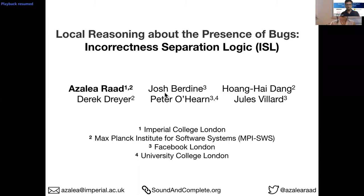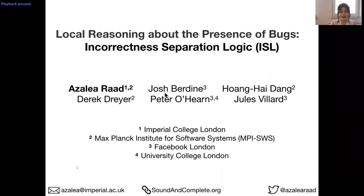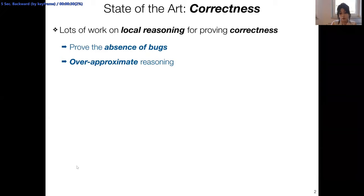Hello everyone, thank you for joining me virtually. I'm Azalia, and I'm going to talk about our recent work on incorrectness separation logic, joint work with Josh Badin, Hi Dang, Derek Dreyer, Peter O'Hearn, and Jules Villard. When it comes to verification, there are typically two schools of thought. Correctness techniques try to prove the absence of bugs for a given program, usually based on over-approximate reasoning about behaviors.